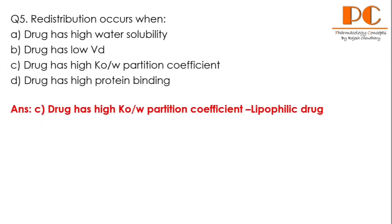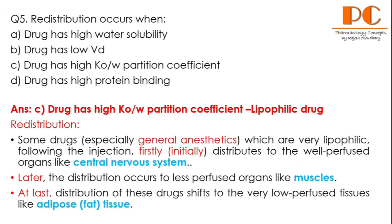The right answer is C — drug has high oil/water partition coefficient, meaning highly lipophilic drugs are redistributed in the body. Some drugs, especially general anesthetics which are highly lipophilic, are initially distributed to well-perfused organs like the CNS. Later, redistribution occurs to less-perfused organs like muscles, and finally to adipose tissue. Highly lipophilic drugs have high affinity for fat, so adipose tissue ultimately binds and stores them.